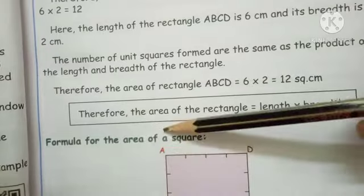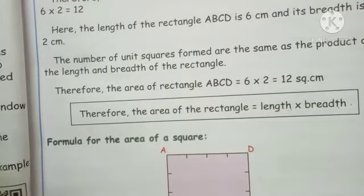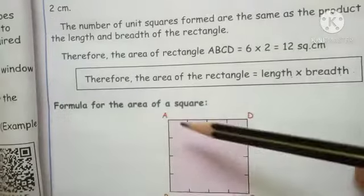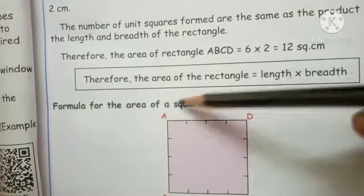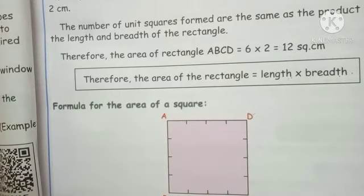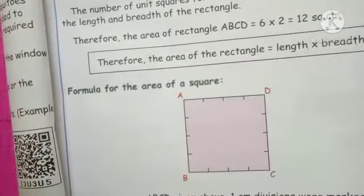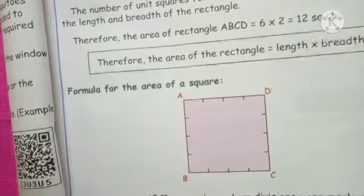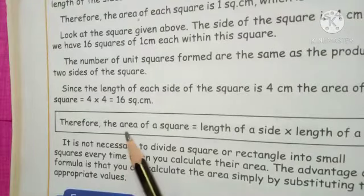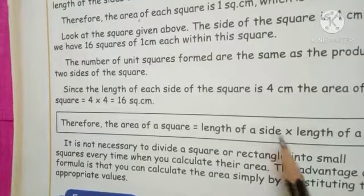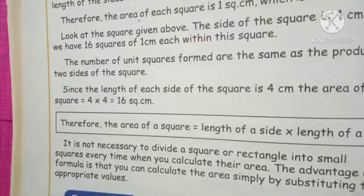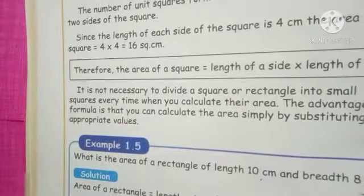Next formula: area of a square. For a square, all four sides are equal. That is why the formula is: area of square equals length of side multiplied by length of side. Now I will show you an example sum.